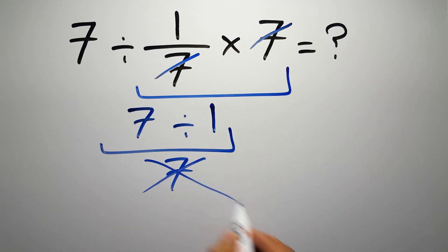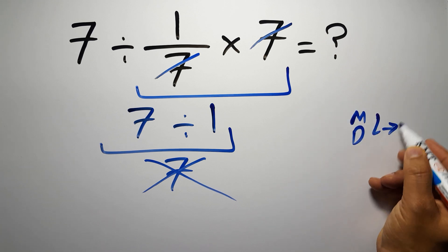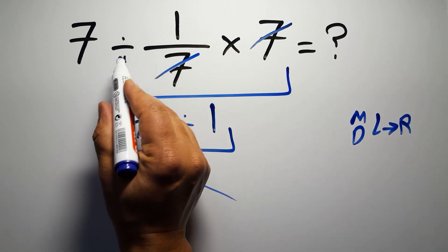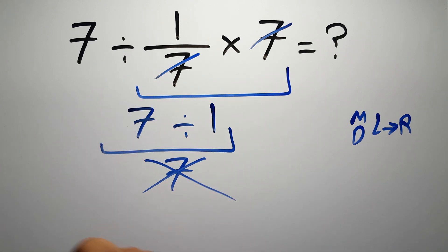But this answer is not correct, because according to the order of operations, multiplication and division have equal priority and we have to work from left to right. So here first we have to do this division, then this multiplication. If we do this multiplication before this division, it is wrong.